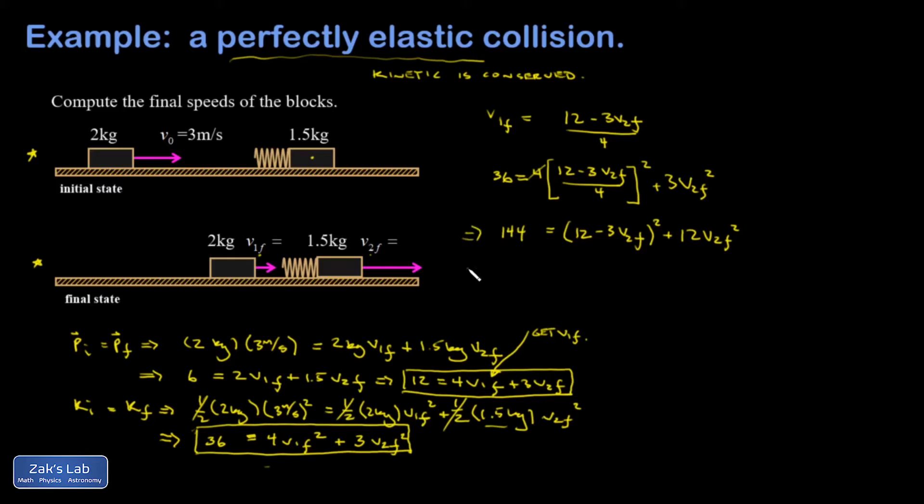And when I square this binomial in the parentheses, I'm going to do FOIL for that, and the product of the 12 times 12 is 144. And then my cross terms are going to be a negative 36v2 final minus another 36v2 final, and then I have a quadratic term plus 9v2 final squared.